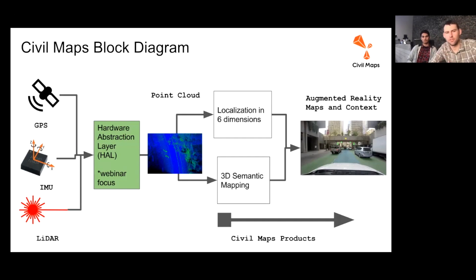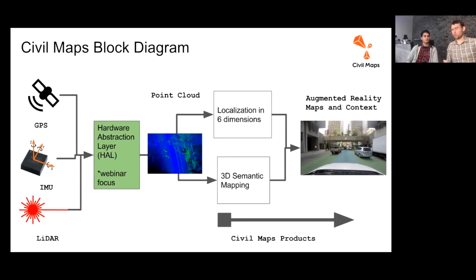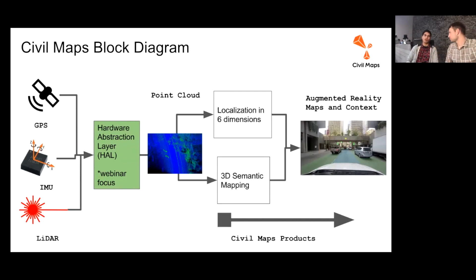We're going to focus more on the hardware abstraction layer. That is taking the LiDAR, IMU, and GPS from different vendors and creating a point cloud from it. This is really important, especially for us, because we work with multiple customers. It's important that we can take in different types of LiDAR and different IMUs and still work with that. From an engineering and customer integration standpoint, as much as we can abstract out tightly coupled hardware dependencies, the better.